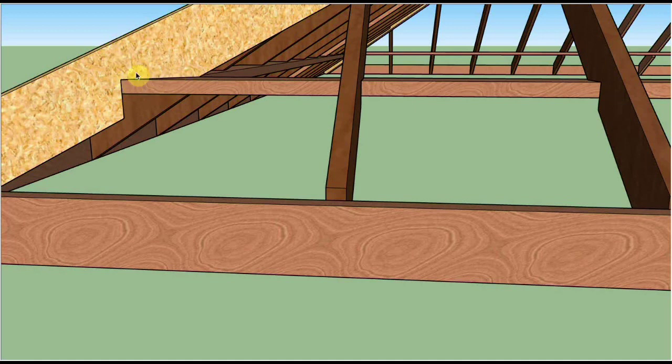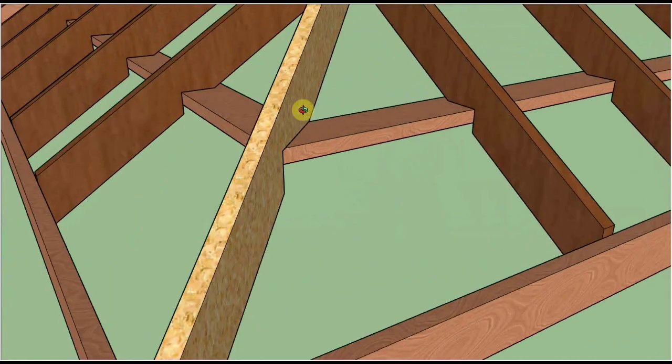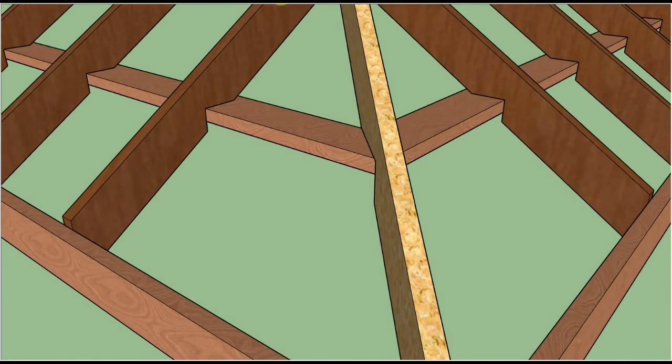When we're laying out the bird's mouth for the hip rafter, we measure the stand on the common rafters, or in this case the hip jack rafter because it's got the same bird's mouth as a common rafter. We get that vertical height, the stand, and in this case it's 3 and 15/16 inches.